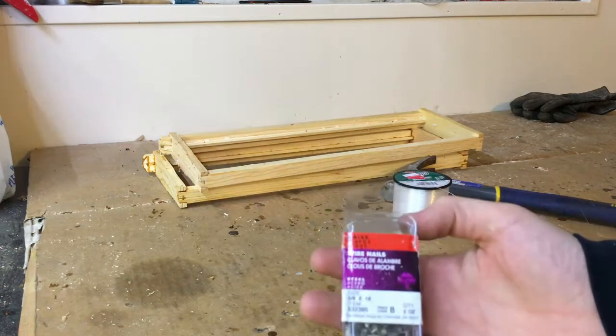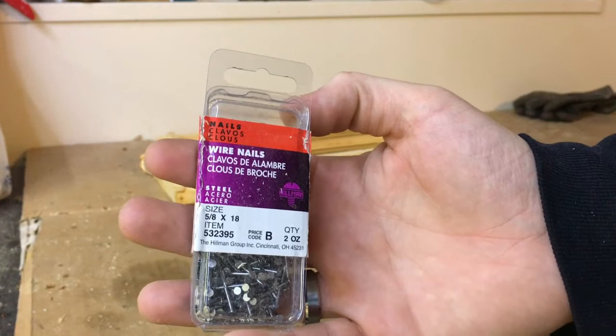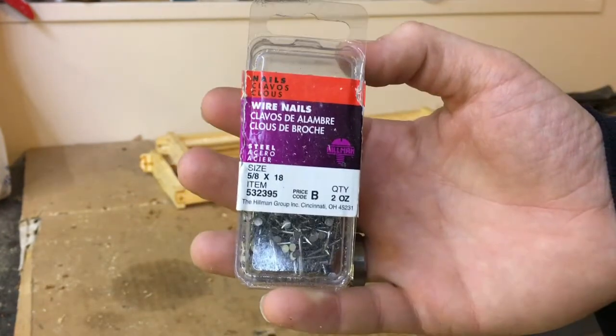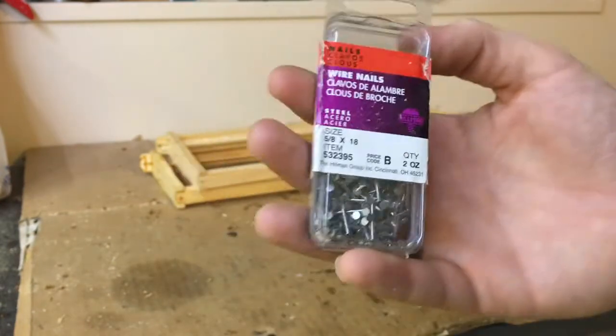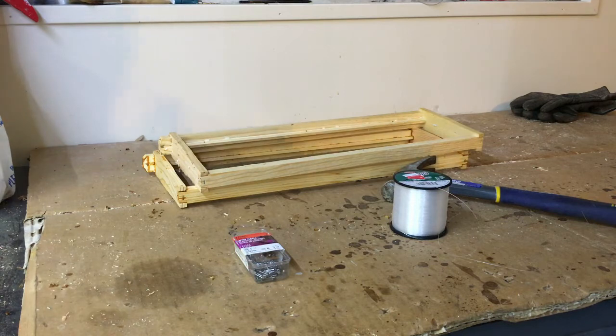You're going to need some wire nails to actually hold the fishing line down. You want them to have a wider head. 5/8 or 3/4 I think are the perfect size. 5/8 are what I had. Next time I'll actually buy 3/4 - they're a little easier to grab onto.